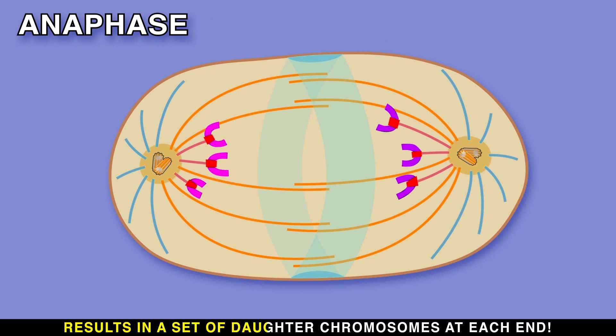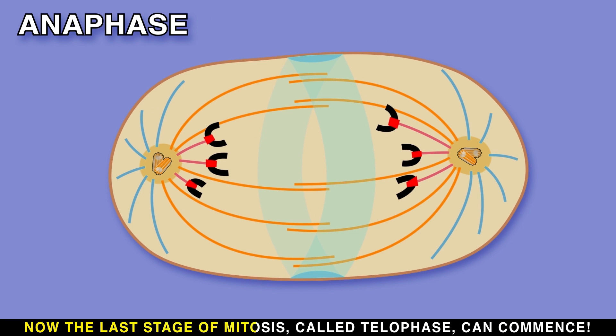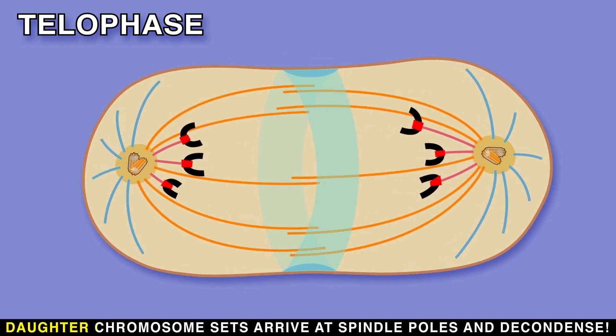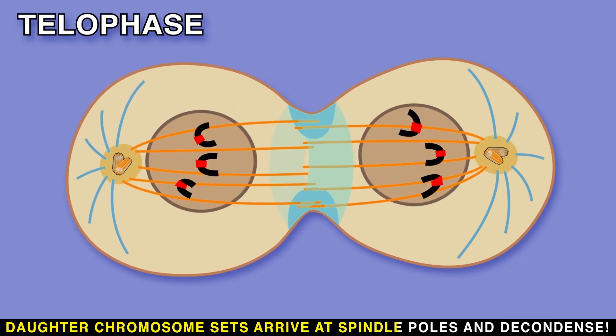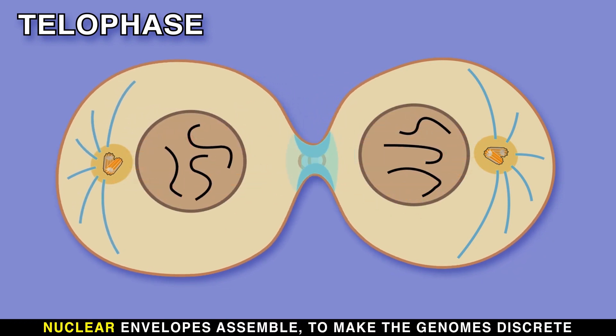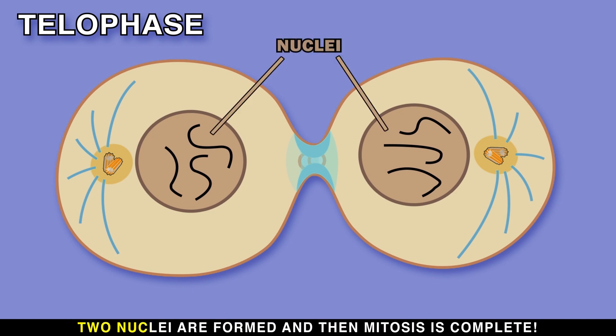Now the last stage of mitosis called telophase can commence. Daughter chromosome sets arrive at spindle poles and decondense. Nuclear envelopes assemble to make the genomes discrete. Two nuclei are formed and then mitosis is complete.